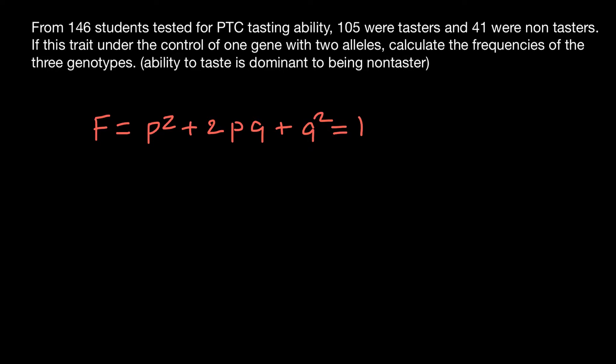In our case we have two alleles: T dominant and t recessive. The term p squared stands for the homozygous dominant genotype, 2pq stands for the heterozygous genotype, and q squared stands for the homozygous recessive genotype. So we have three genotypes and two phenotypes.